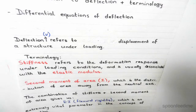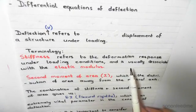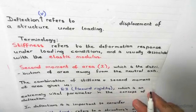We have some terminology. Stiffness refers to the deformation response under loading conditions and is usually associated with the elastic modulus E. As we've seen, this is also known as Young's modulus of elasticity.